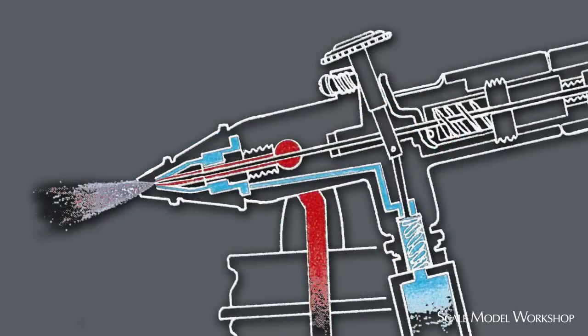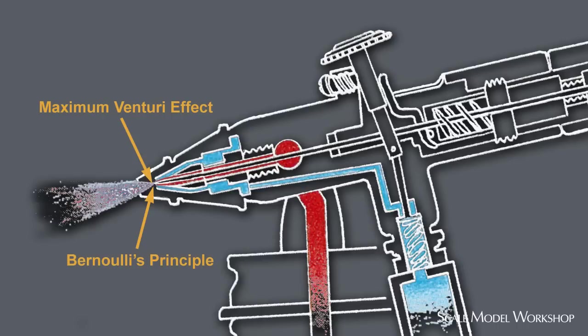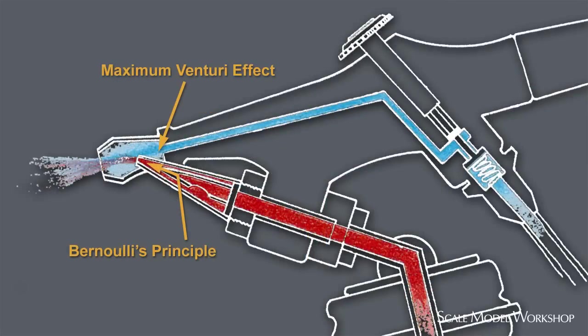With an internal mix airbrush, the paint enters parallel to the airstream right at the exit point, resulting in maximum atomization. The Pache H places the material entry well in front of the air exit point.